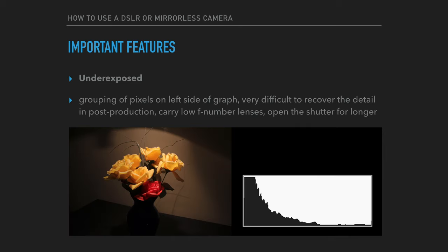When an image is underexposed, the histogram will show a grouping of pixels on the left side of the graph. Once an image is underexposed, it will be very difficult to recover image detail with post-production software. This type of exposure will be visibly grainy. You must avoid underexposing images — carry low f-number lenses with you and consider opening the shutter for longer periods of time.